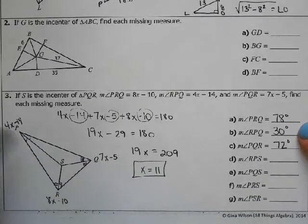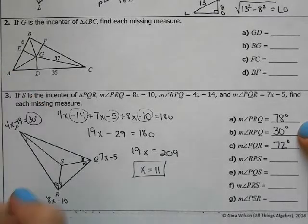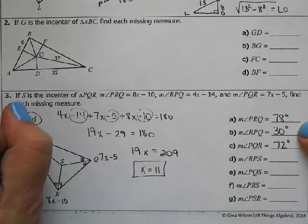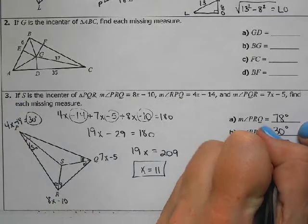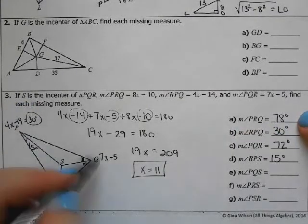So half of 30 would be 15 degrees. PRQ, 78 degrees. We're going to remind ourselves of that. And then this angle was 72 degrees.